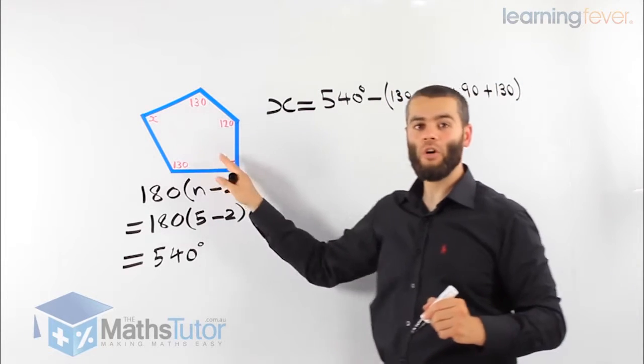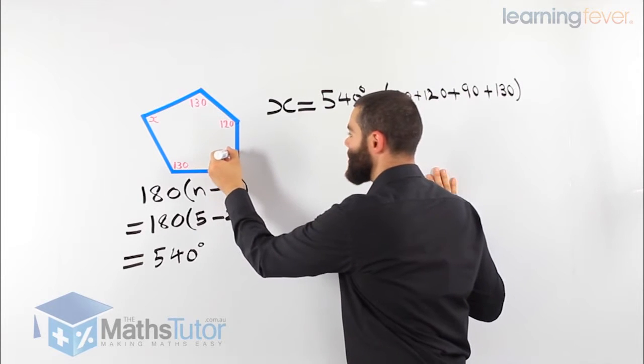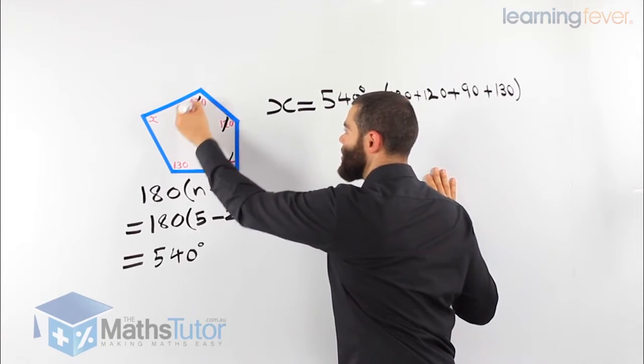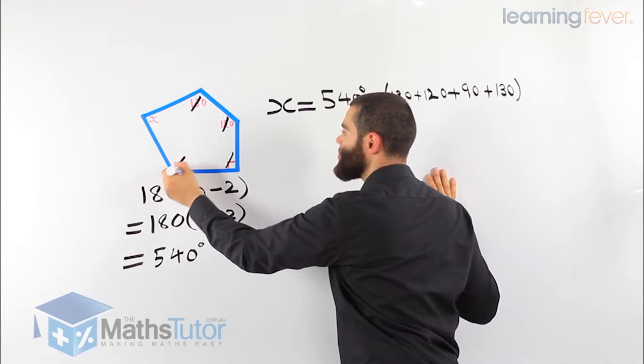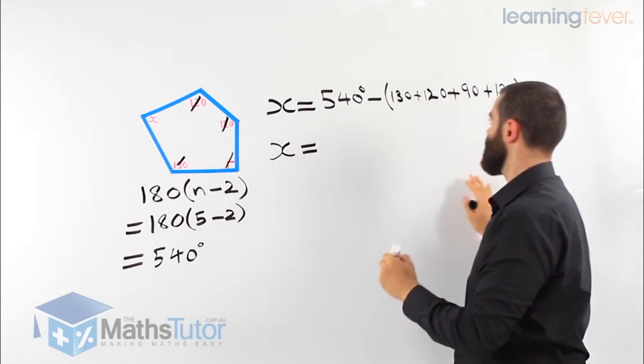So 540 is the total, we're going to take away all the other angles. We're going to take this one away, take that one away, take that one away, take that one away. We're going to be left with x, which is the missing angle that we're looking for.